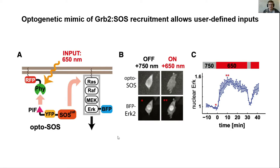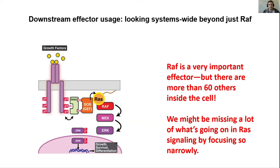This is a fantastic example of how, if you understand how RAS signaling works, the logic, you can build a system to really interrogate its function in a super novel way. As a demonstration, when they shine light on the system, it leads to ERK translocation into the nucleus only when the light is on. That's just a sneak preview for that discussion.